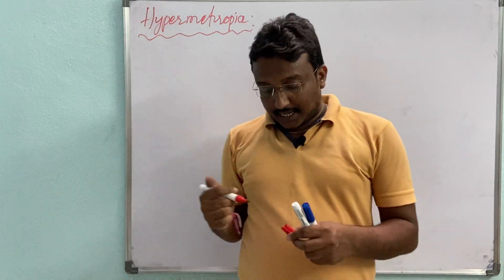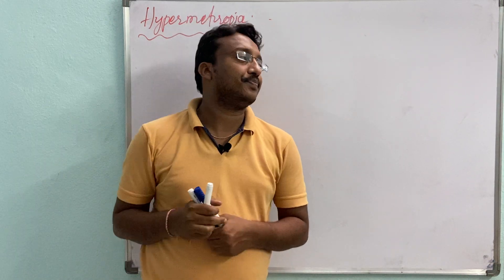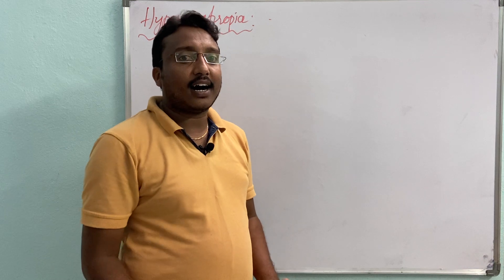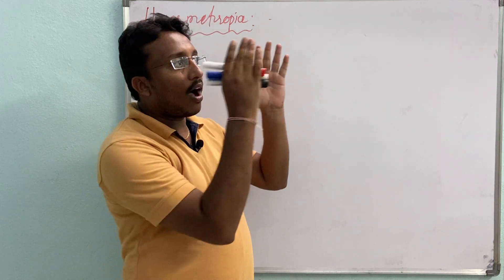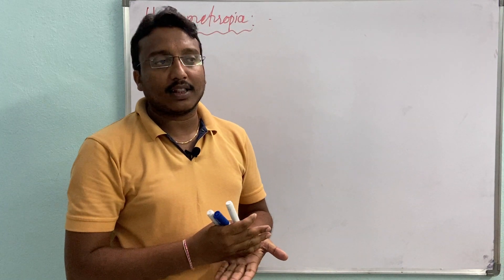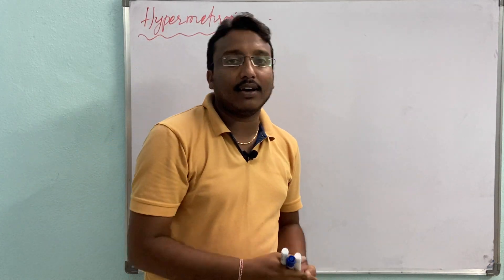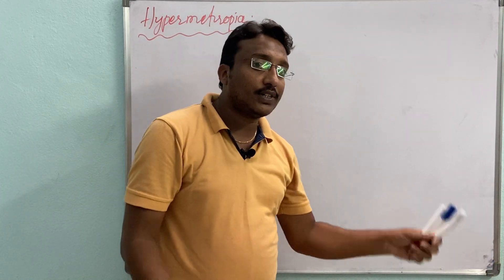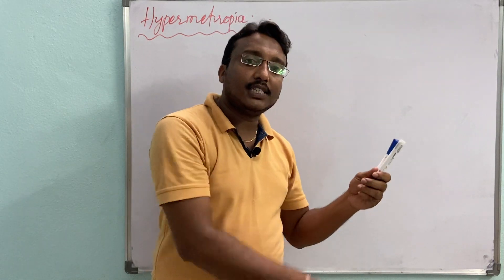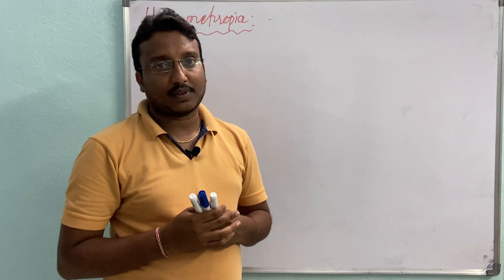A person suffering with hypermetropia can see far objects very clearly, but objects which are closer to the eye — those images are blurred.